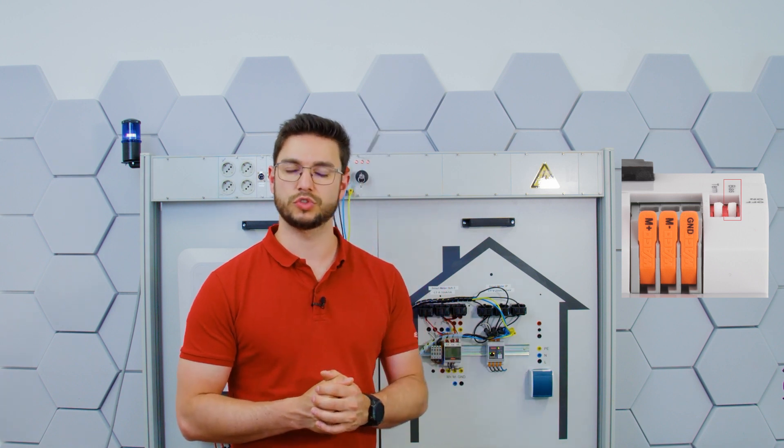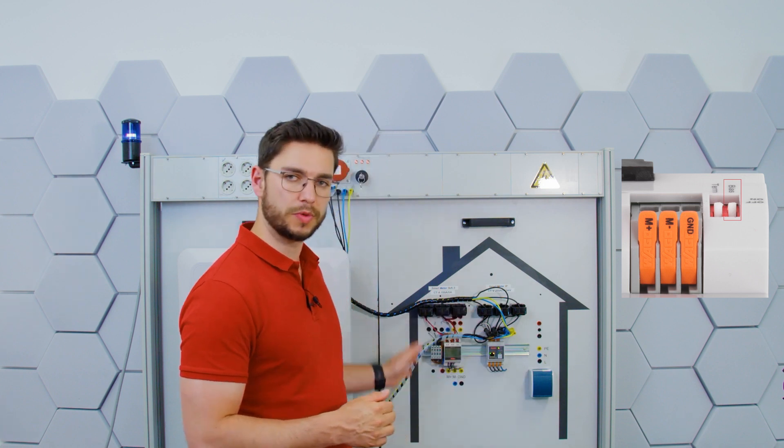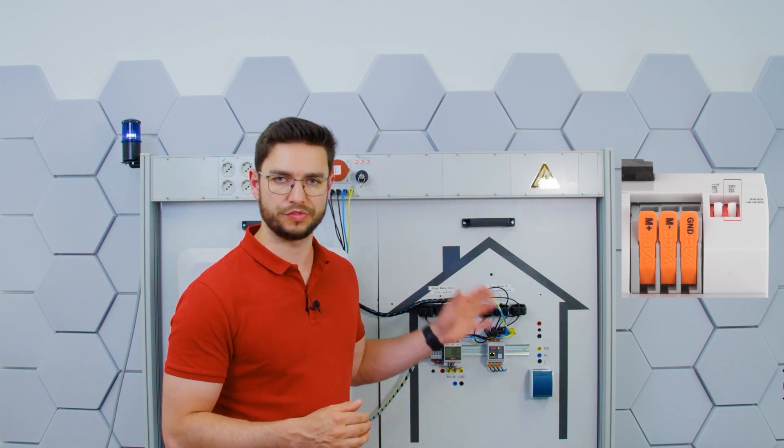And second up, we have the bias switch right next to the termination switch, which is necessary to turn to on position when it's in the Modbus communication together with a Fronius compatible battery. Only then we need to switch it to on. In every other scenario, or when we connect it via LAN or WiFi, we can switch it to the off position. Sounds good.